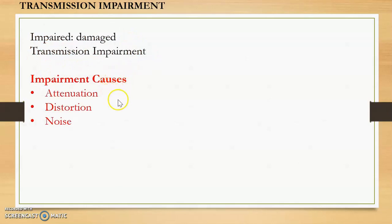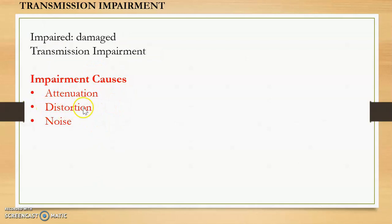There are three main causes of transmission impairment — that is, the signal may get damaged due to three main reasons: attenuation, distortion, and noise. We will study each of these in detail.